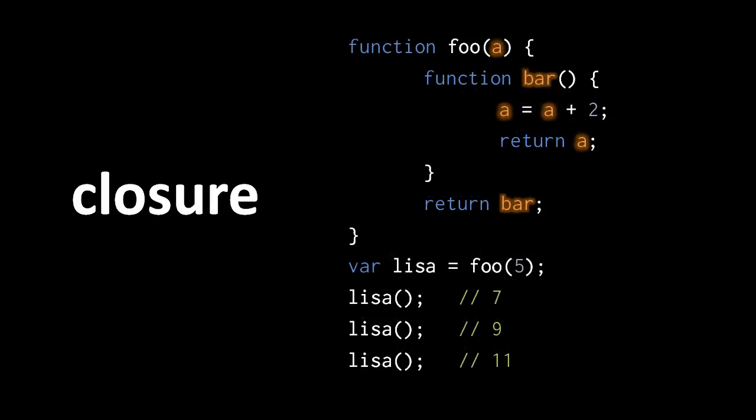For another example, the nested bar function has no parameter of its own, but increments a of the enclosing foo function. We assign to Lisa the copy of bar returned by foo with an argument of 5, and then each time we invoke Lisa, it increments the variable a of its closure by 2 each time. So we get the values 7, then 9, then 11, and so forth.